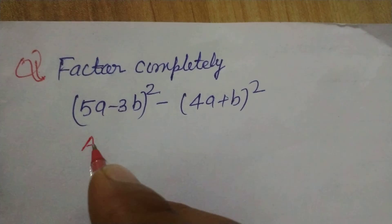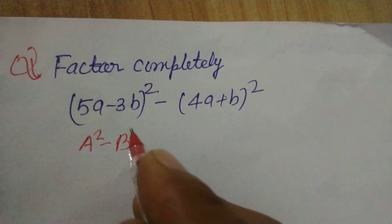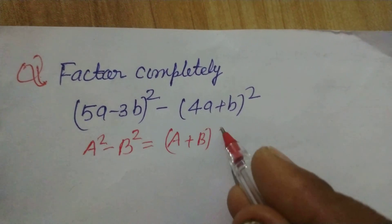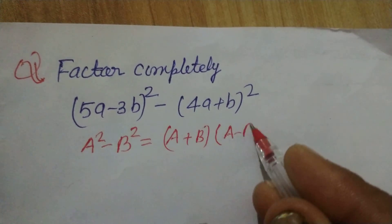So here we use the identity a² minus b² which is equal to (a+b) in the first bracket and (a-b) in the second bracket.